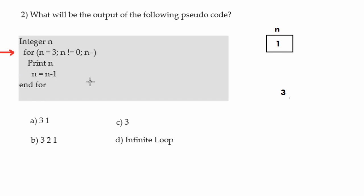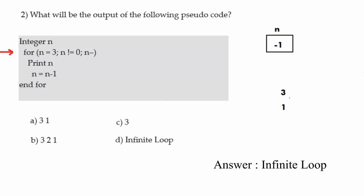We print n, which is 1. Then n equals n minus 1, making n 0. But then n minus minus decrements n again, making n minus 1. We check n not equal to 0 — n is minus 1, which is not equal to 0, so the loop continues. Looking at the four options, there is no option showing minus 1. Since n will never become 0 due to the decrement, this is an infinite loop. So our answer is D.